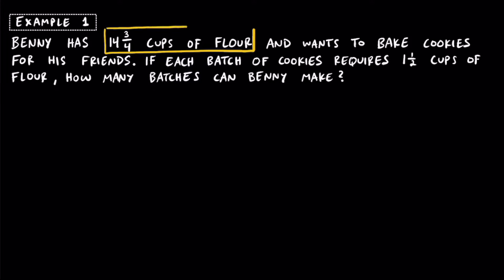Here we have the total number of cups of flour that Benny has — that's going to be this 14 and 3 quarters. He needs one and a half cups of flour for each batch of cookies. So think about it: Benny needs one and a half cups for the first batch, another one and a half for the second batch, and so on. He's basically going to keep doing this until he runs out of flour, constrained by 14 and 3 fourths cups. So we're going to see how many times we can fit one and a half into 14 and 3 fourths before we run out.